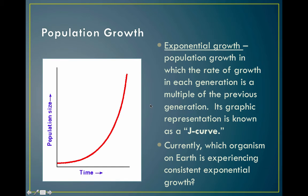Exponential growth is when a population increases by a percent rather than a fixed integer. The shape of the curve is called a J-curve. This only happens when the population is small and environmental conditions are ideal. The only organism currently still exhibiting exponential population growth without hitting its carrying capacity is humans.